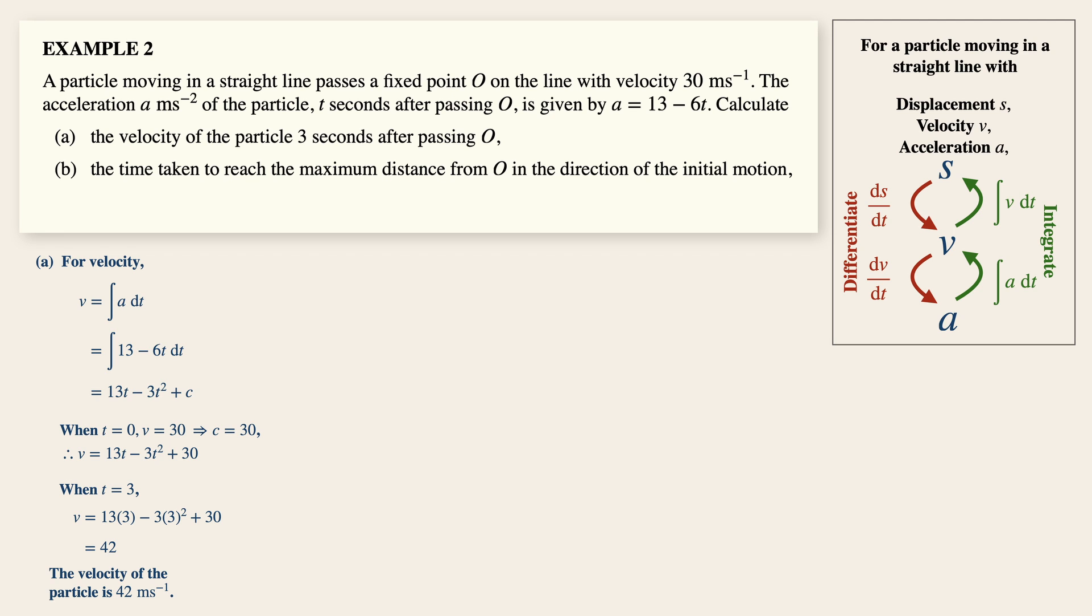Now if you don't have the displacement equation yet, not to worry, look out for the velocity equation, and then simply equate it to zero. Now by solving the quadratic equation, t is minus five over three, or t is six.